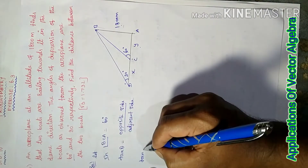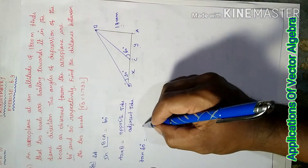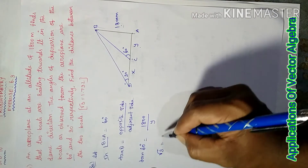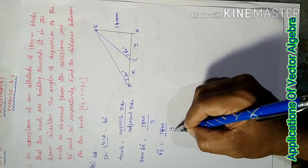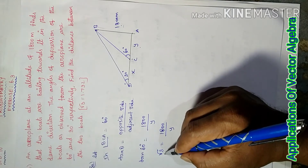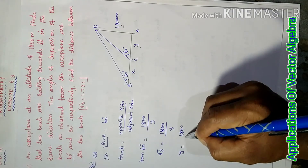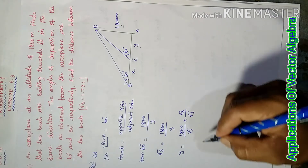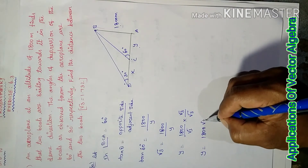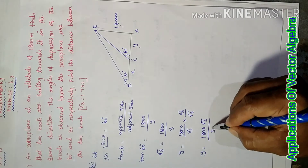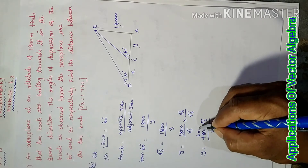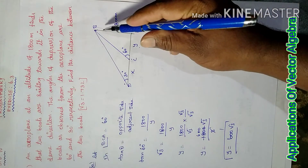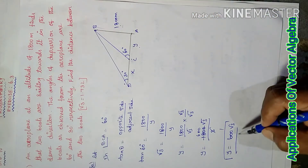From the first triangle: tan 60 degrees = 1800 / y. Cross multiplying, root 3 into y equals 1800, therefore y equals 1800 divided by root 3, which gives y equals 600 root 3. So the distance to the first boat, BC equals 600√3 meters.